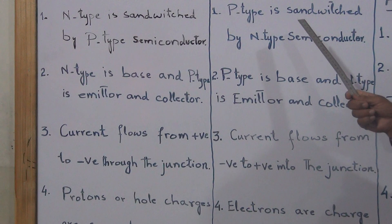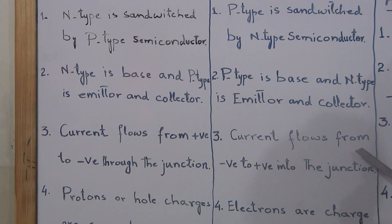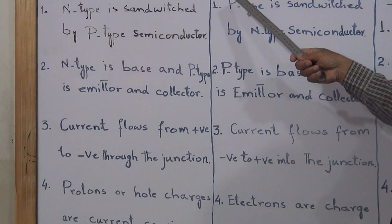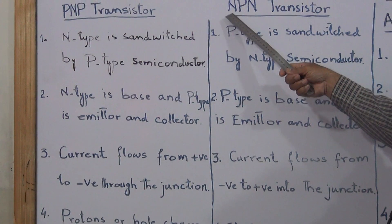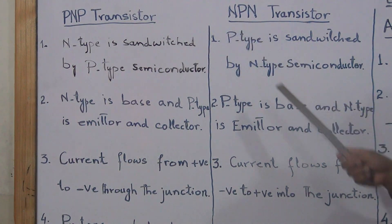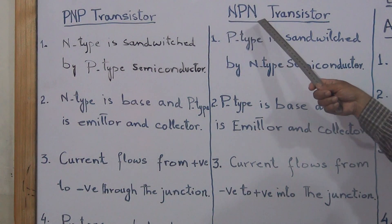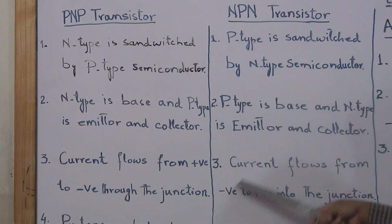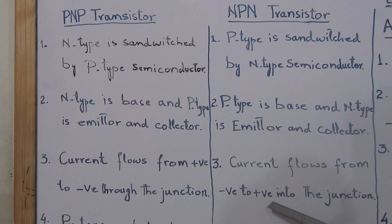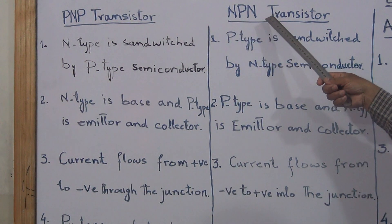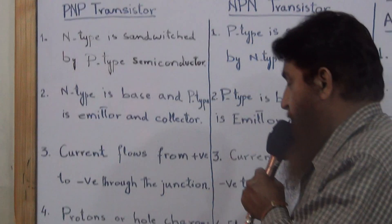In NPN transistor, current flows from negative into the junction. NPN current flows from negative to positive through the junction.